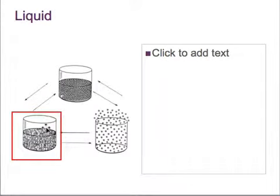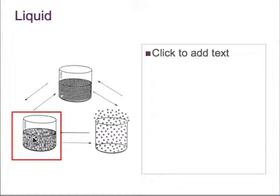The liquid state is shown here, and you can see there's no formal arrangement in liquids. All the molecules or atoms are still touching, but there's not that strict arrangement like in the solid.